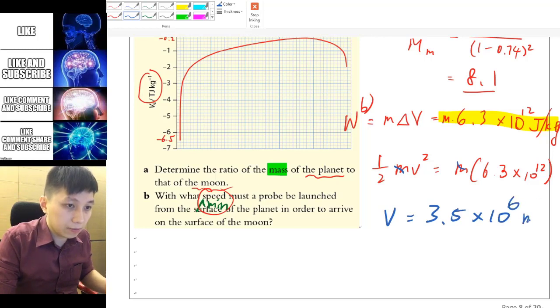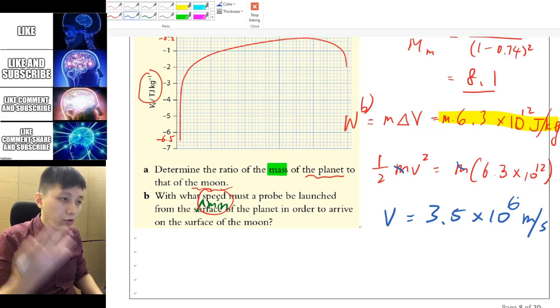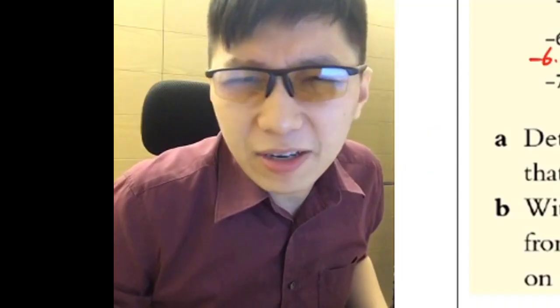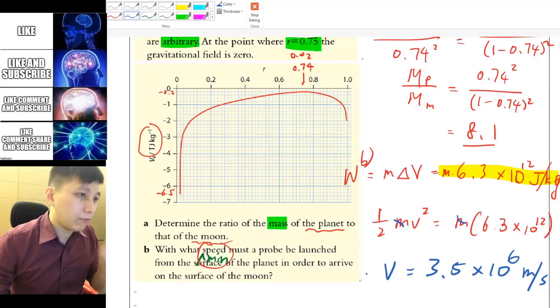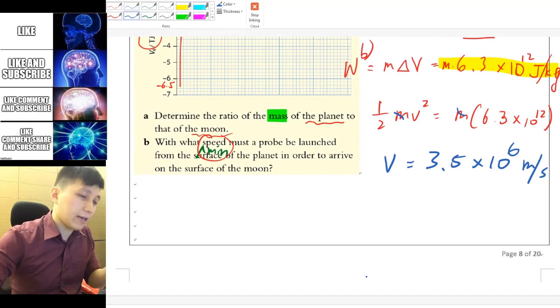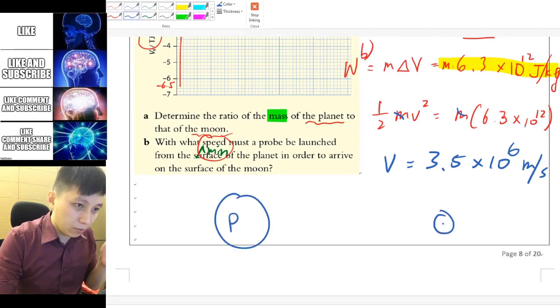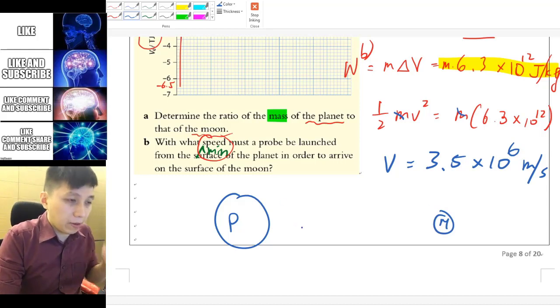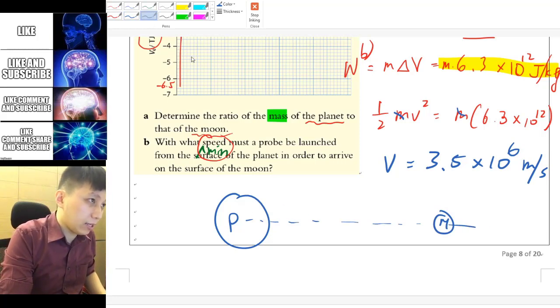And so eventually you should be able to find a V as something like 3549 something so I'll take it as 3.5 times 10 to the power of 1 2 3 4 5 6, 6 meter per second so that will be the speed you need to launch for this probe in order to send it to the moon. Is that really how the rocket get launched?